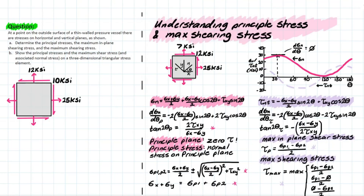However, this equation doesn't consider the maximum absolute shearing stress, which accounts for the direction and orientation of principal stresses. For example, if you had a compressive and a tensile force — a negative and a positive — you'd flip the sign and add them to get a higher absolute value. These conditions account for that maximum possible absolute value. Don't worry if it's unclear right now; it will make sense when we get into the problem.